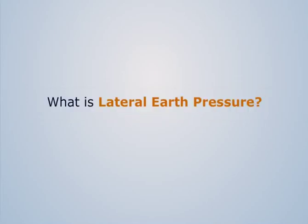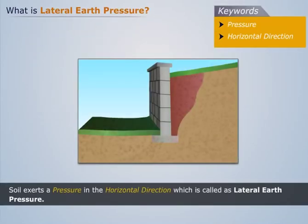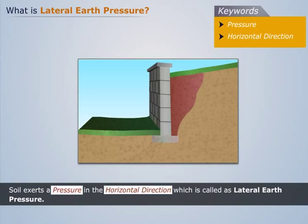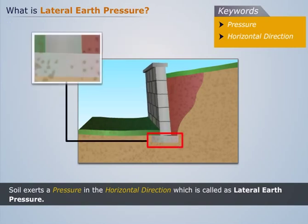What is lateral earth pressure? Soil exerts a pressure in the horizontal direction, which is called lateral earth pressure. The lateral earth pressure is critical as it influences the buildup behavior and soil strength, and therefore it is required for the design of various structures. The image shows how the lateral earth pressure has tilted the retaining wall.